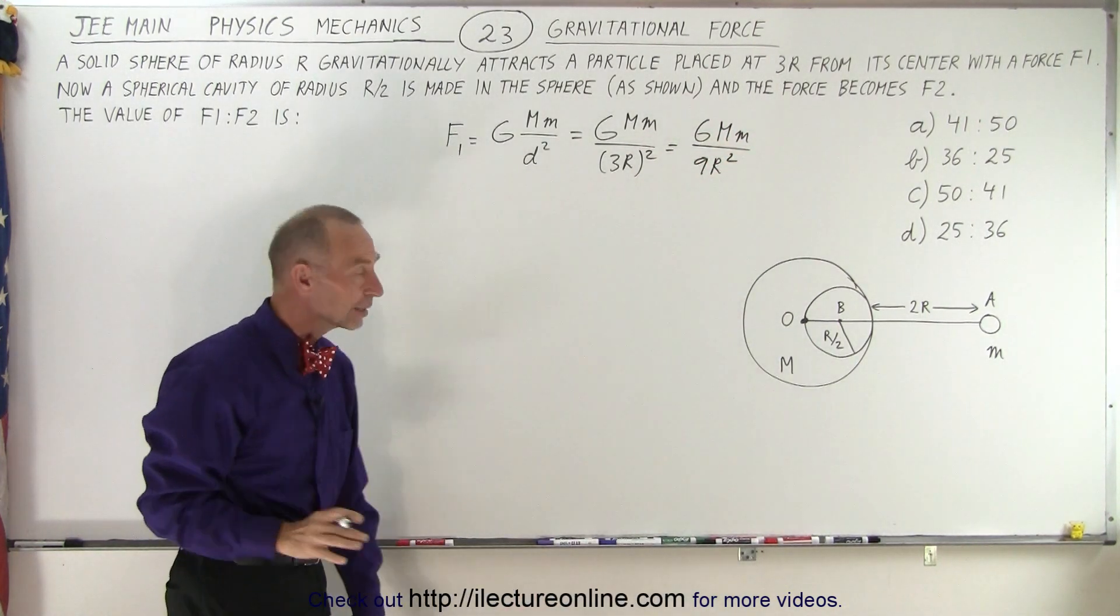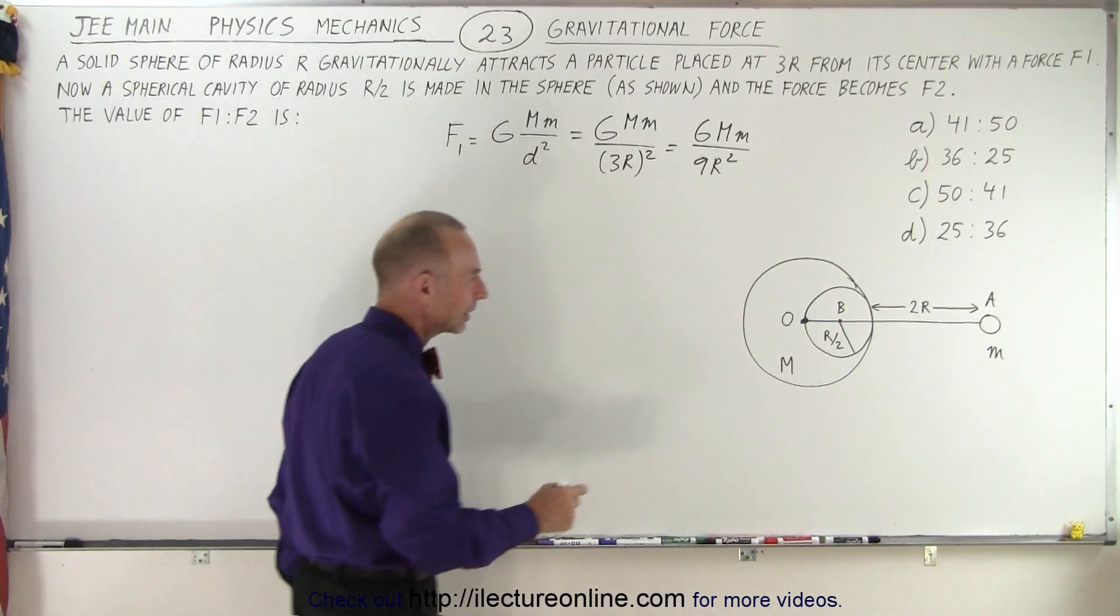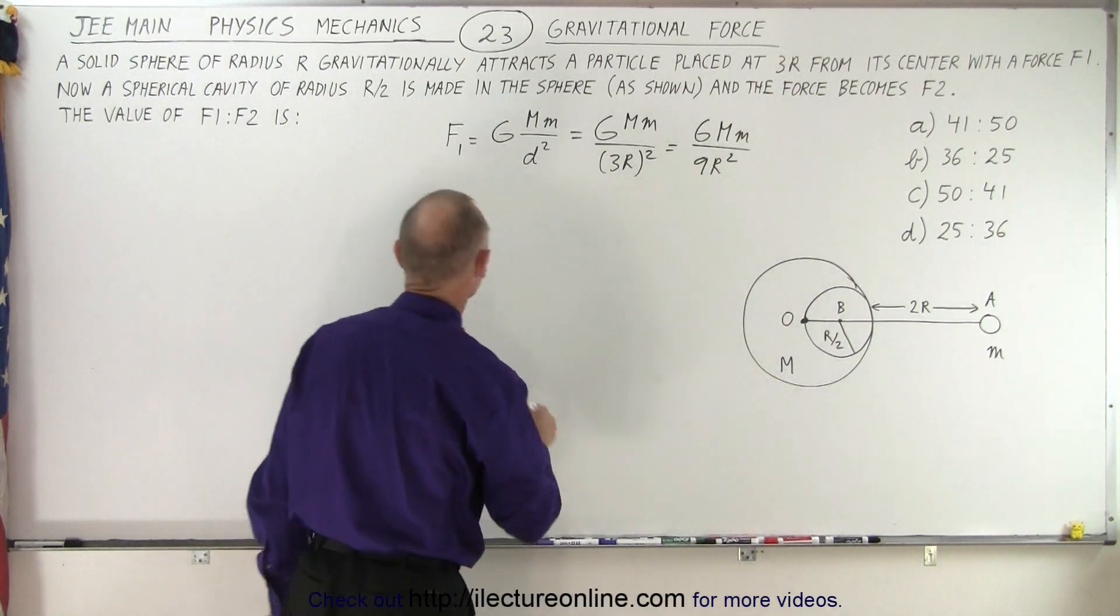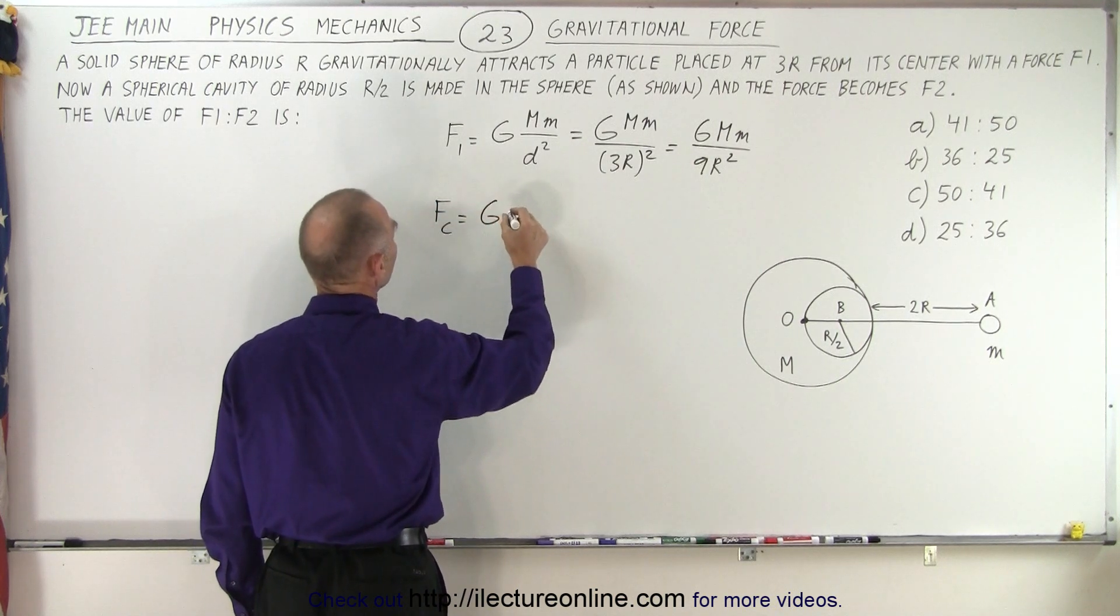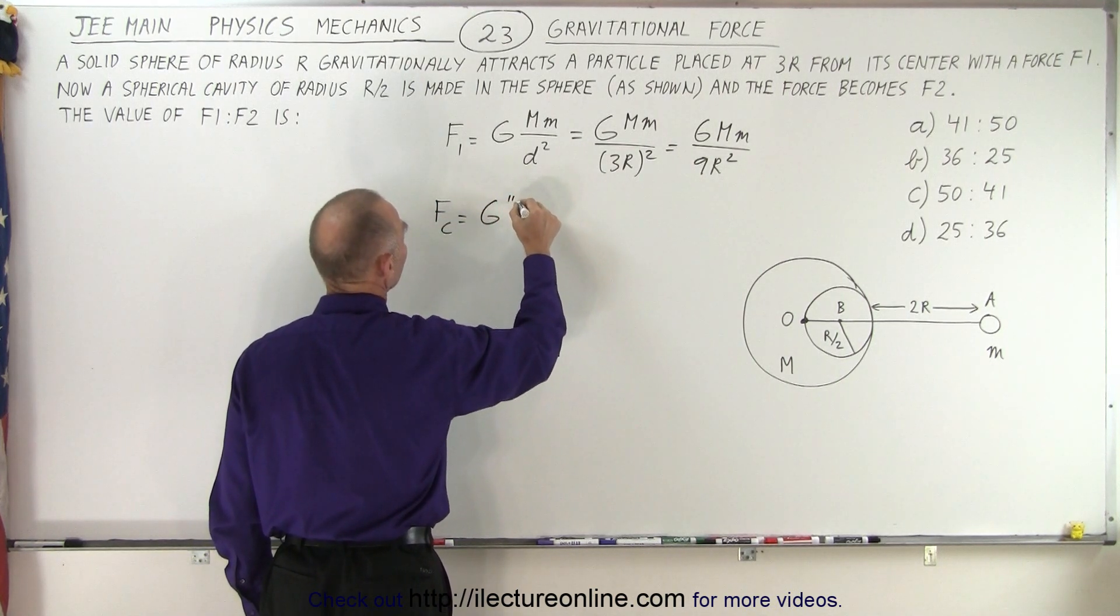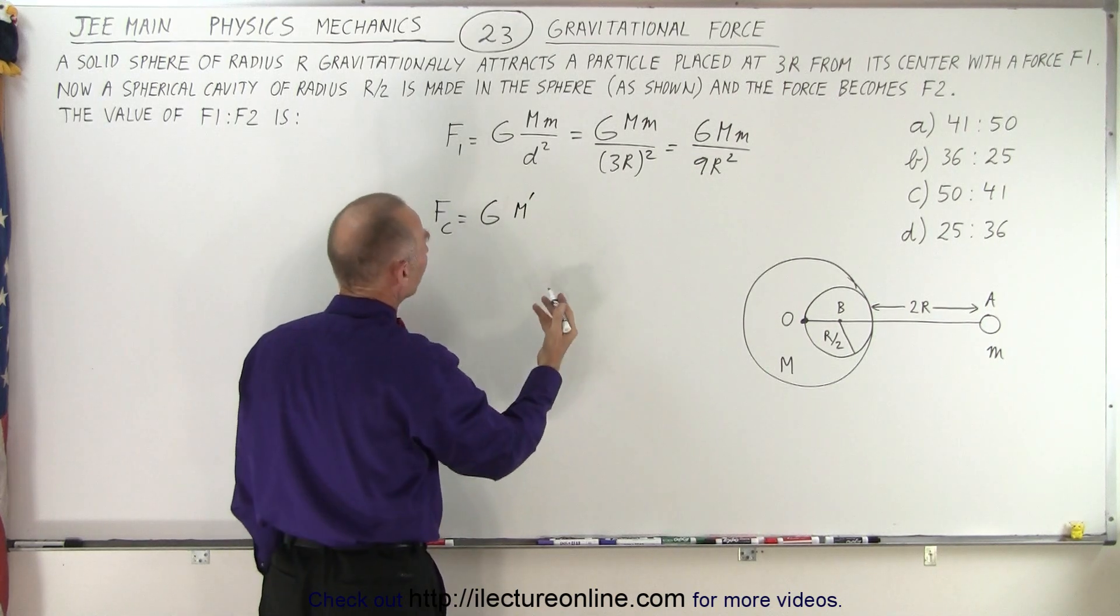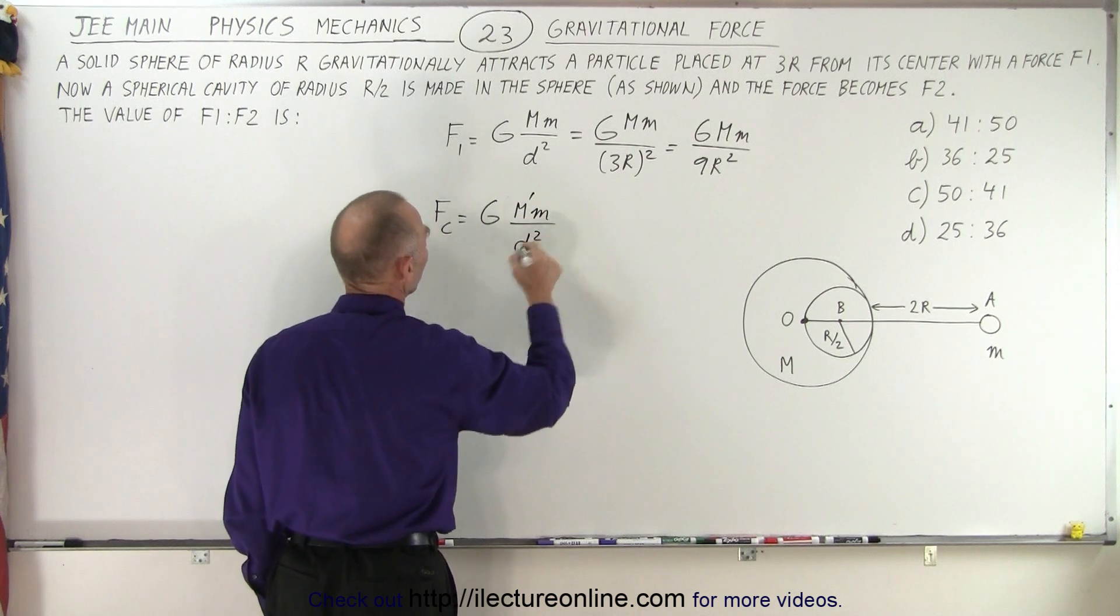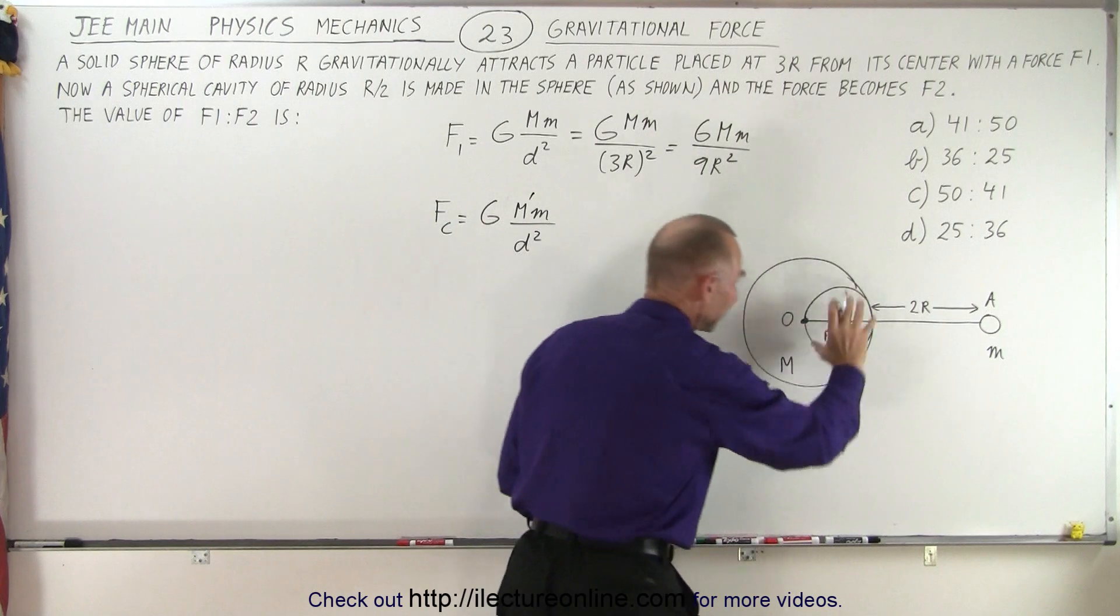Now let's calculate F2. Well before we calculate F2 we're going to calculate what the negative force is of that cavity. So force of the cavity is equal to G times, well maybe we'll write it as m prime because I don't know yet what that is, times the small m divided by the distance squared. Now notice m prime is the mass of the cavity.